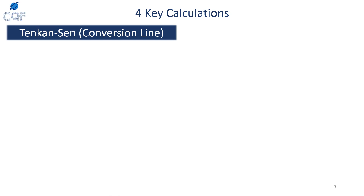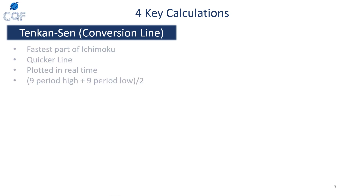There are four key calculations when it comes to the cloud — two lines and two spans. The two spans are what make up the actual cloud. The first line is the conversion line: it is the fastest of the four parts of the Ichimoku, plotted in real time. It is calculated as the nine-period high plus the nine-period low divided by two — the average of the nine-period high and low.